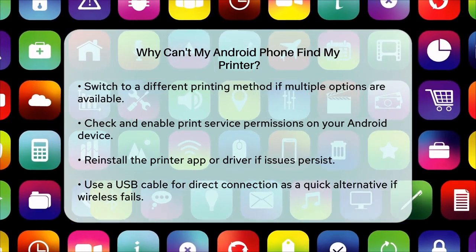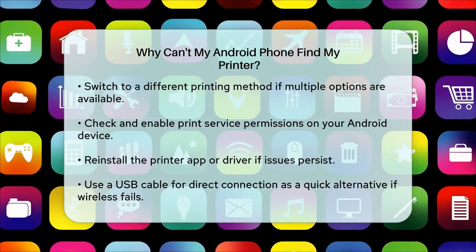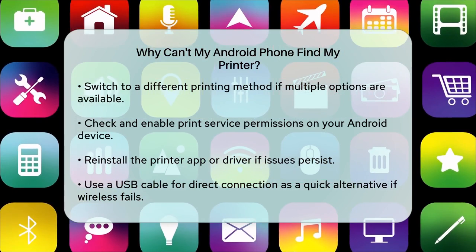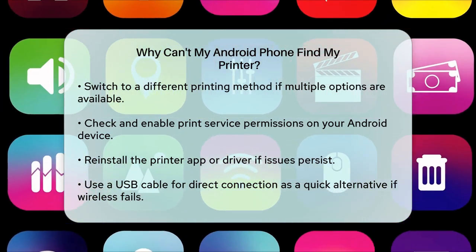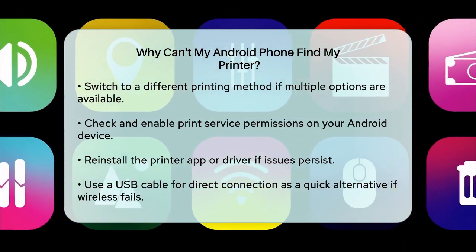Finally, if you are in a hurry and wireless connections are not working, try using a USB cable to connect your Android phone directly to the printer. This can be a quick fix for those tricky situations.